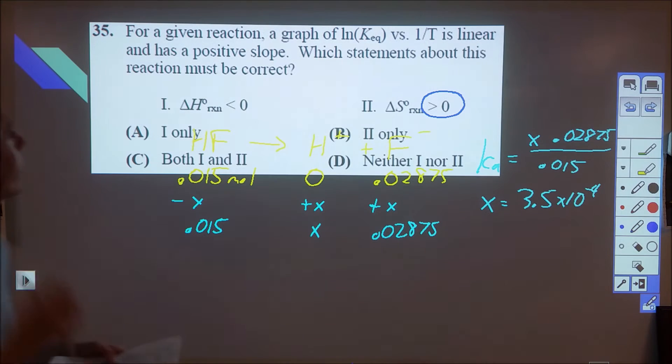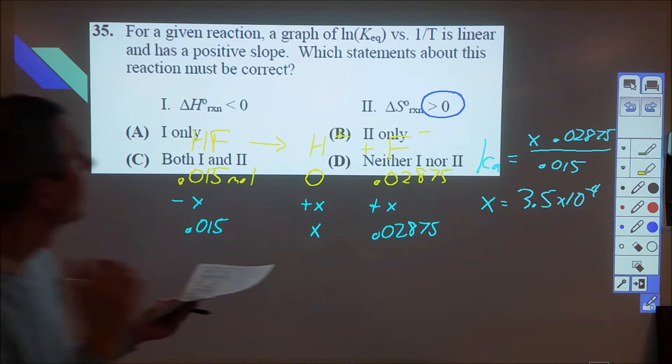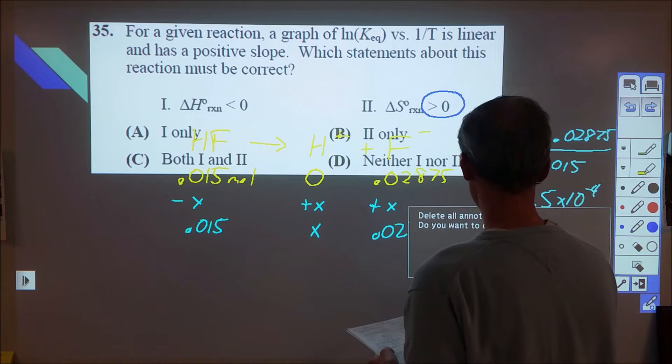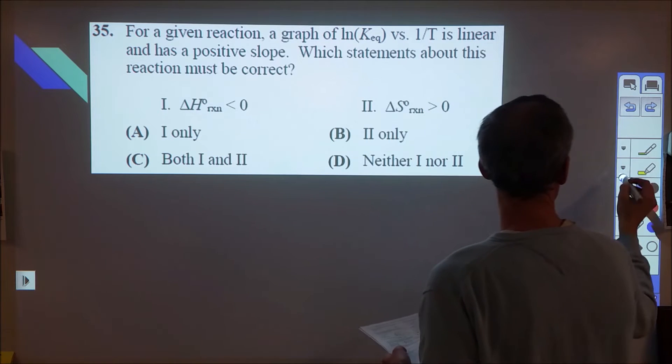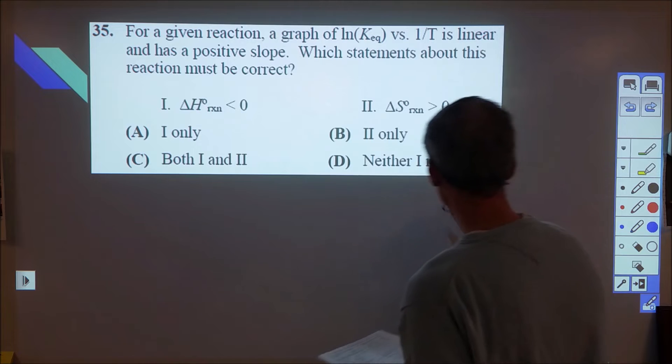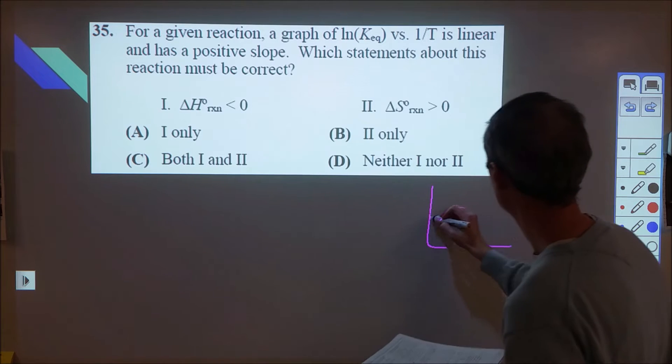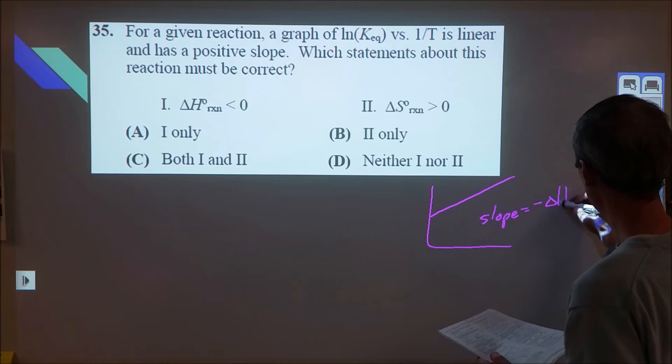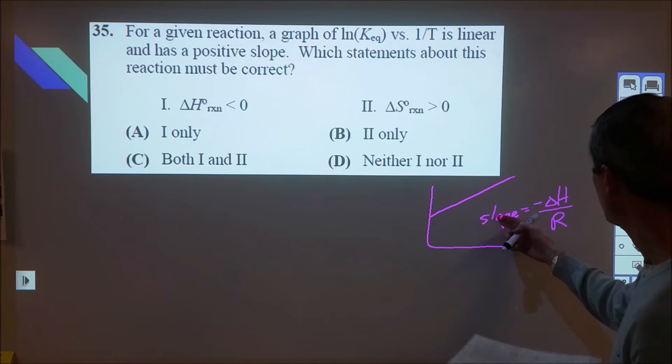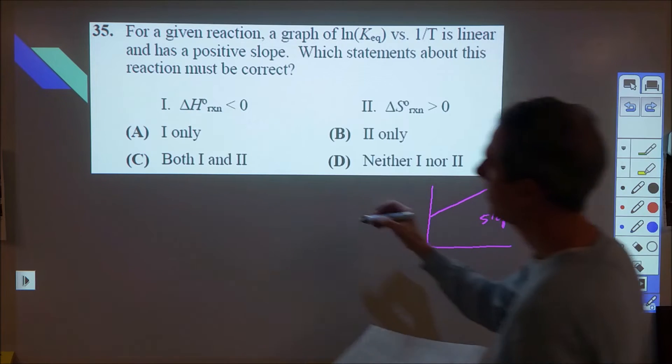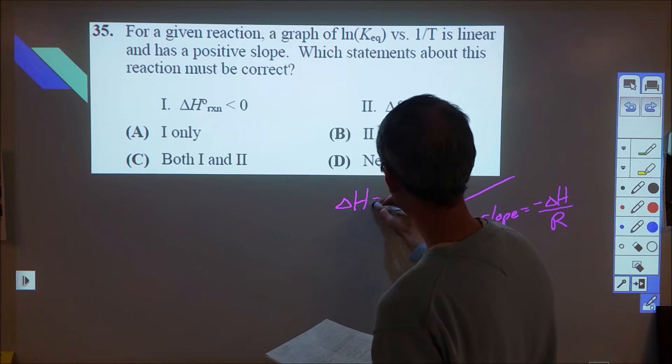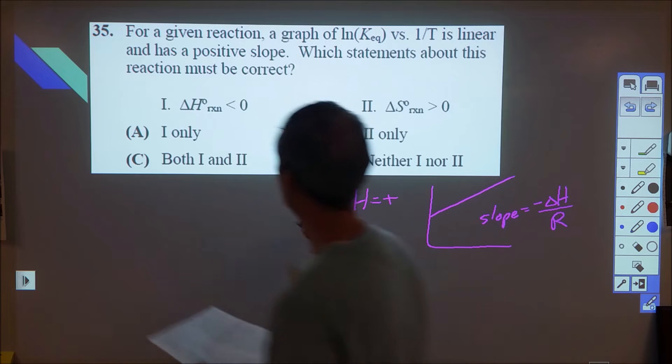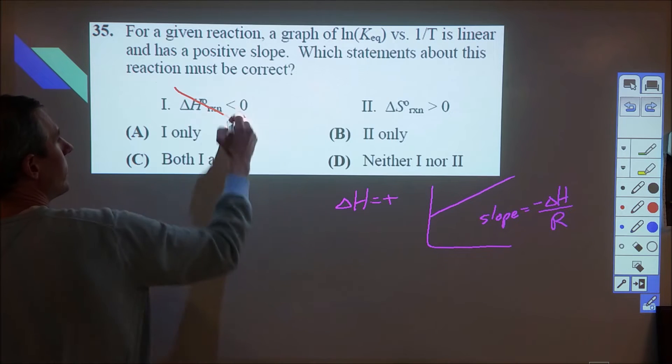Okay, 35. Here we have a graph of natural log of K versus 1 over T is linear and has a positive slope, so that gives us information about our enthalpy. So positive slope, we know the slope is equal to negative delta H over R. So if the slope is positive, that would imply that the delta H is also positive. And the first one says that the delta H is negative, so we know that that's incorrect.